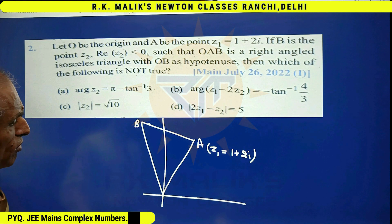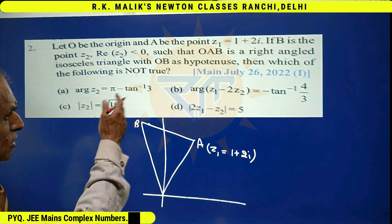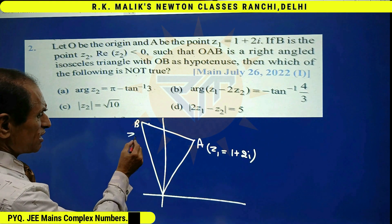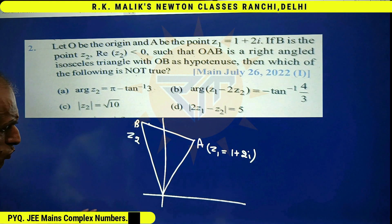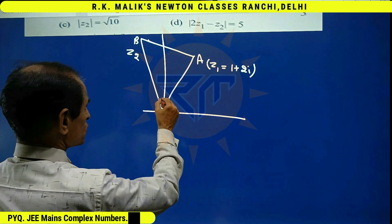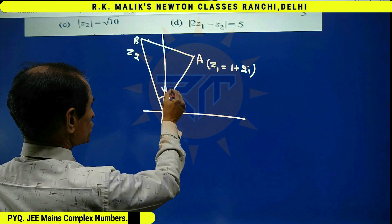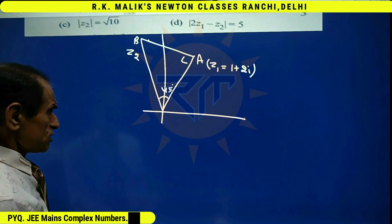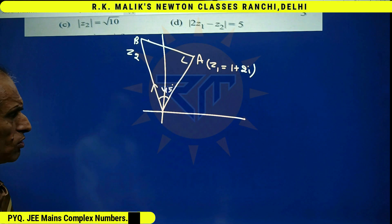Once the affix of B is found, the choices can be checked very easily. As it is given that affix of B is z2, and because this angle is sure to be 45 degrees because it is a right-angled isosceles triangle. Hence, using the Coney's formula or you can also say rotation formula.